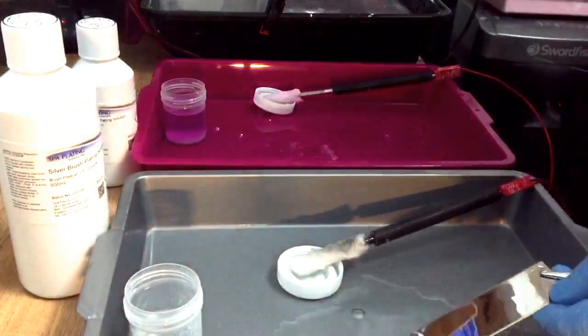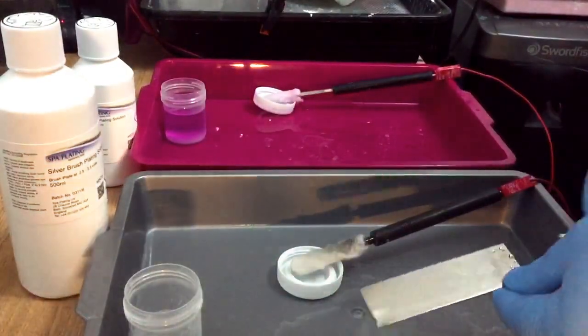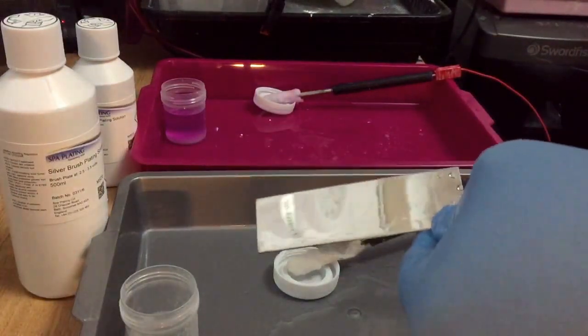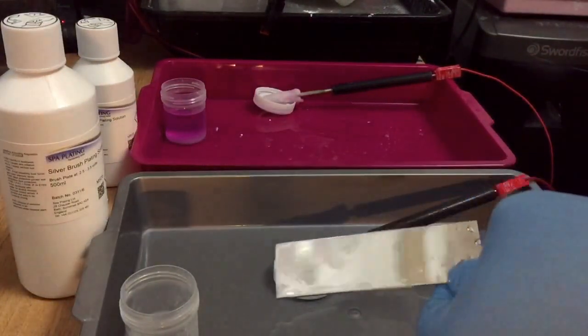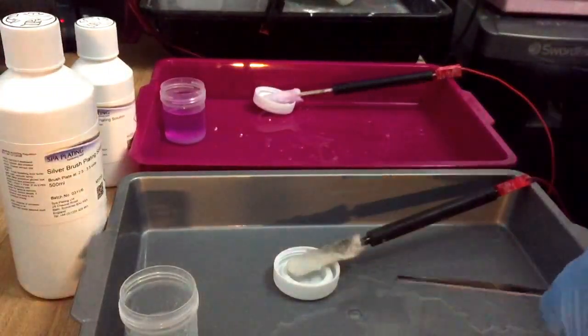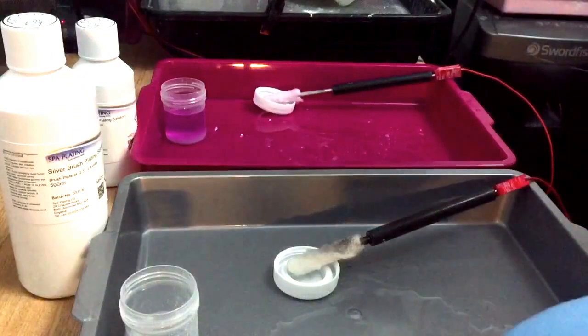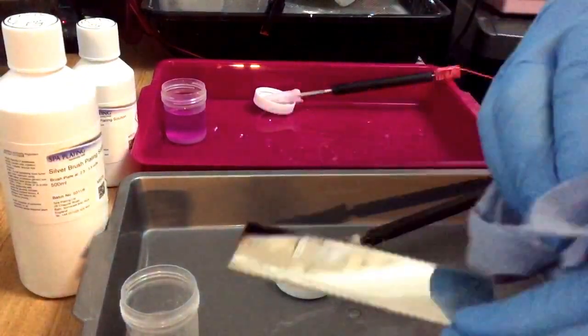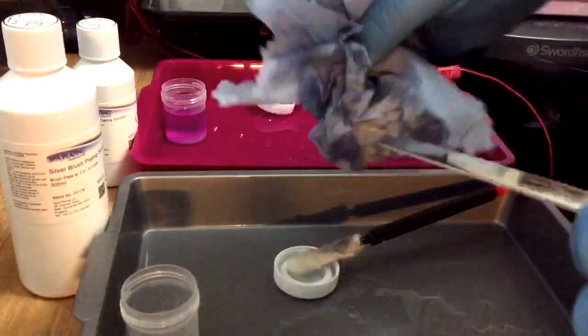And that's it basically. So just the silver plating solution you can get from spa plating directly, in the spa plating shop. And yep, silver on there. You can see the difference right. And I clean it off with a tissue.